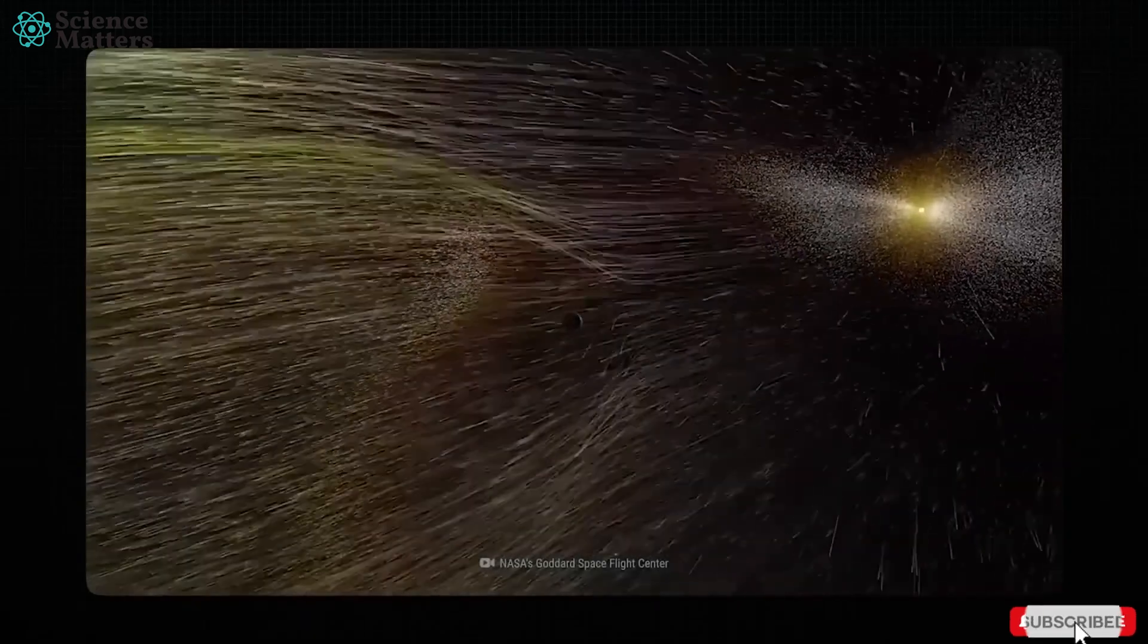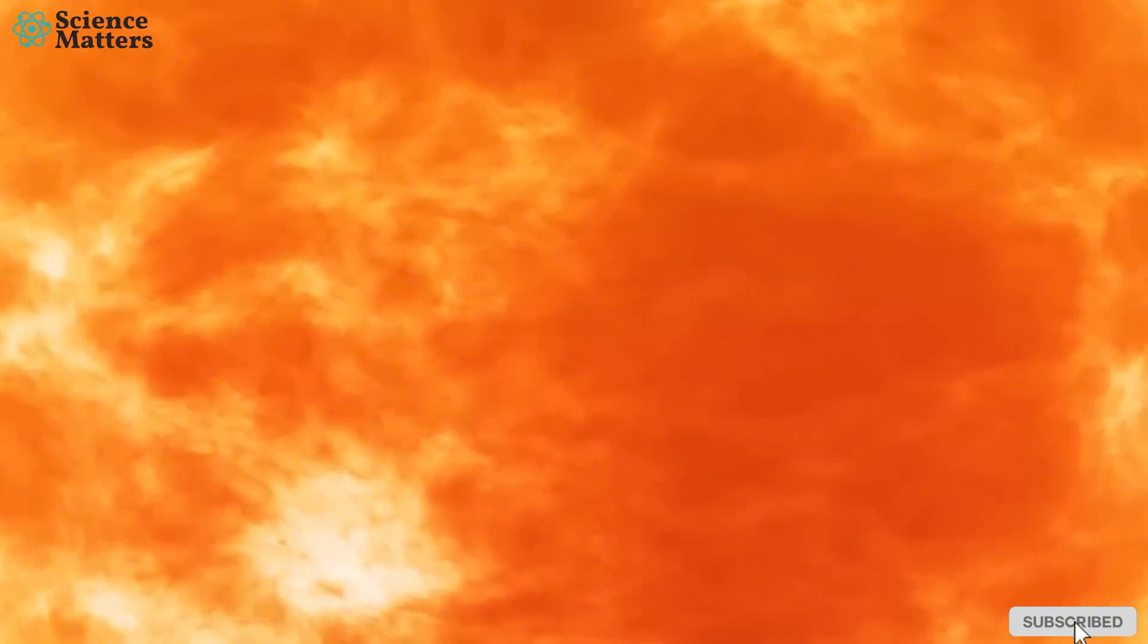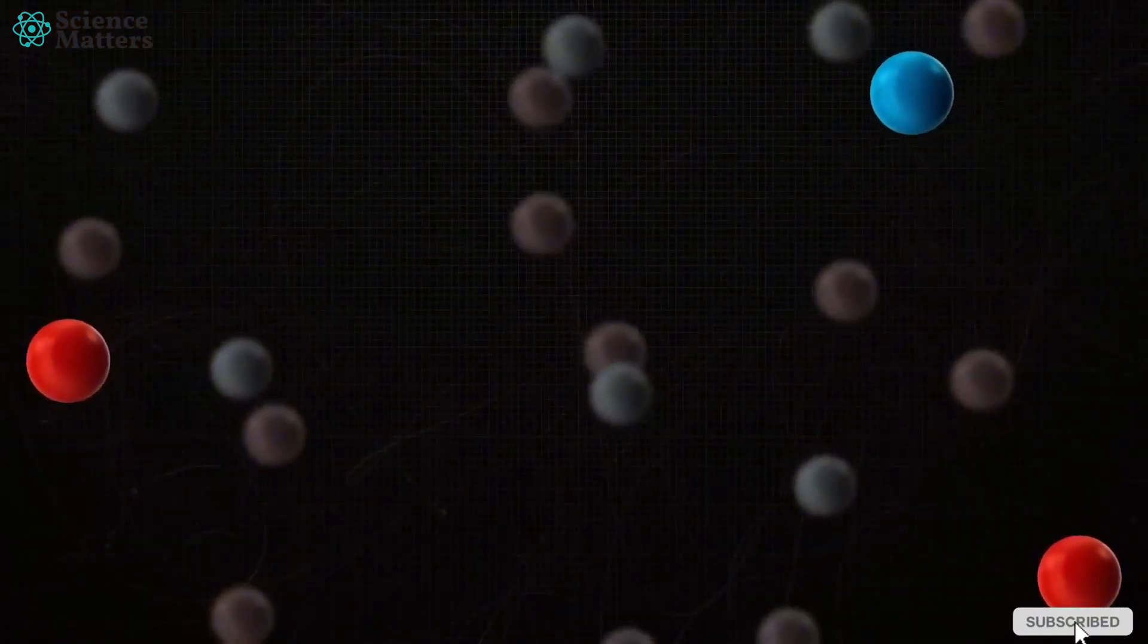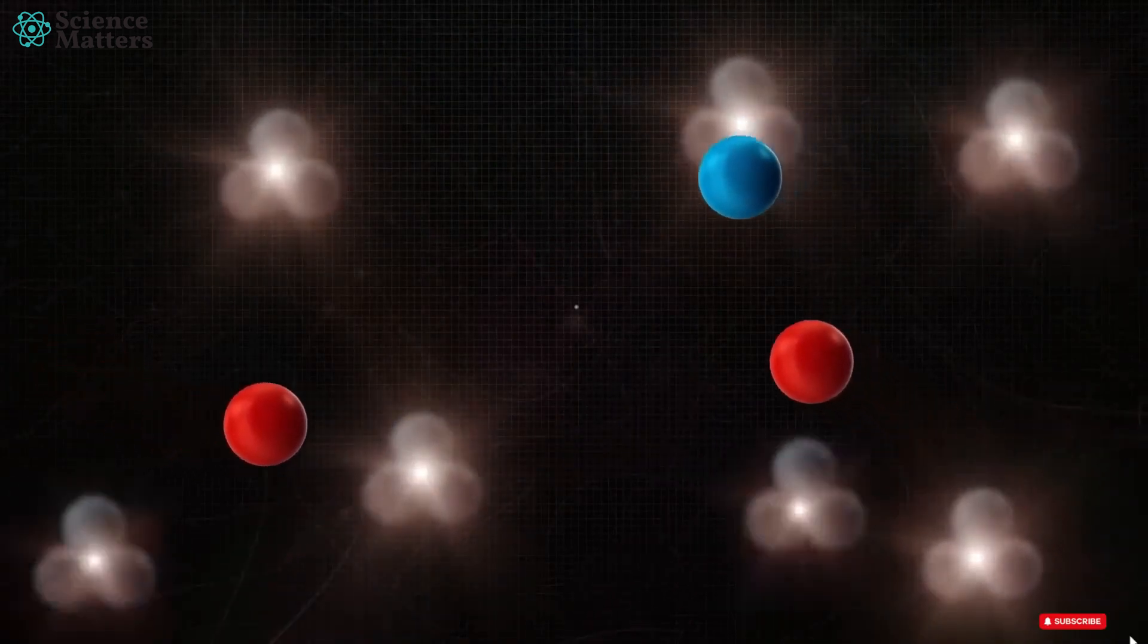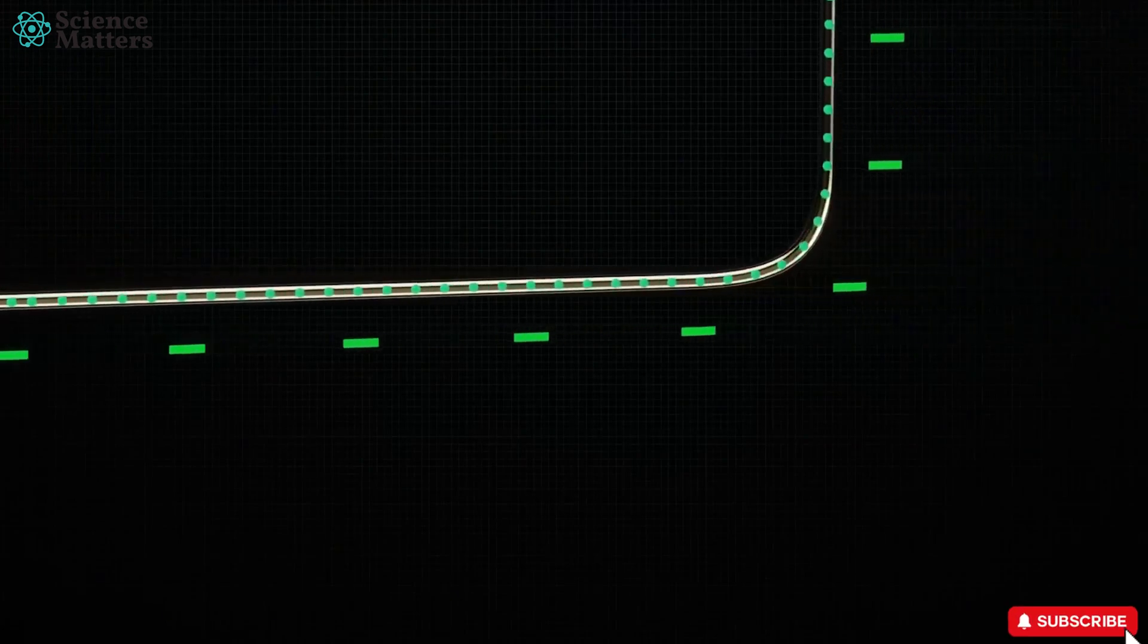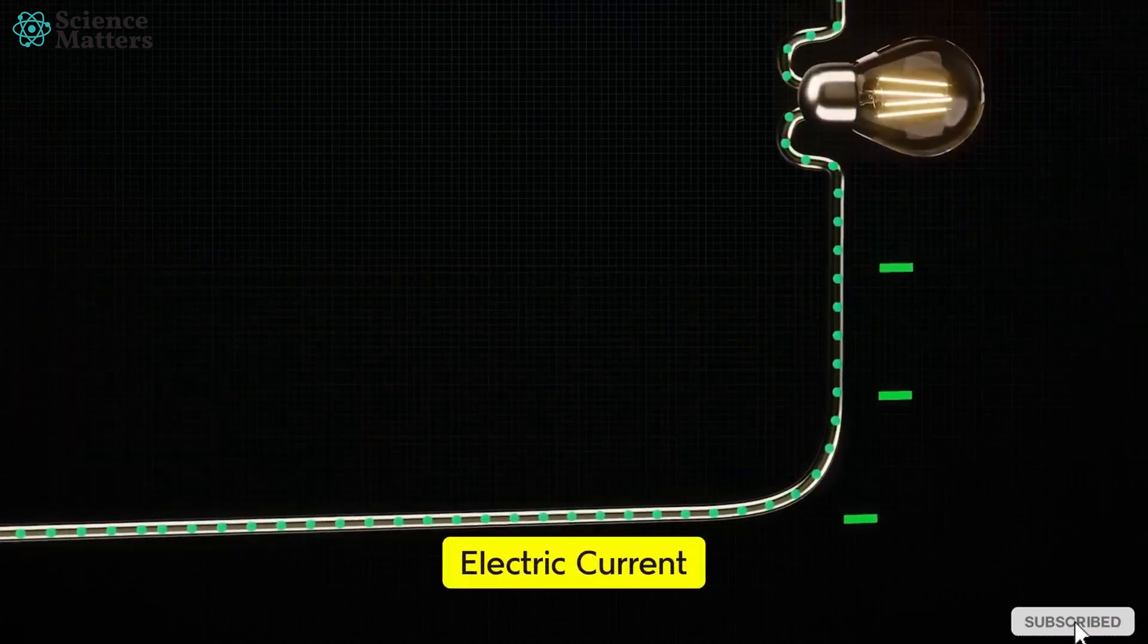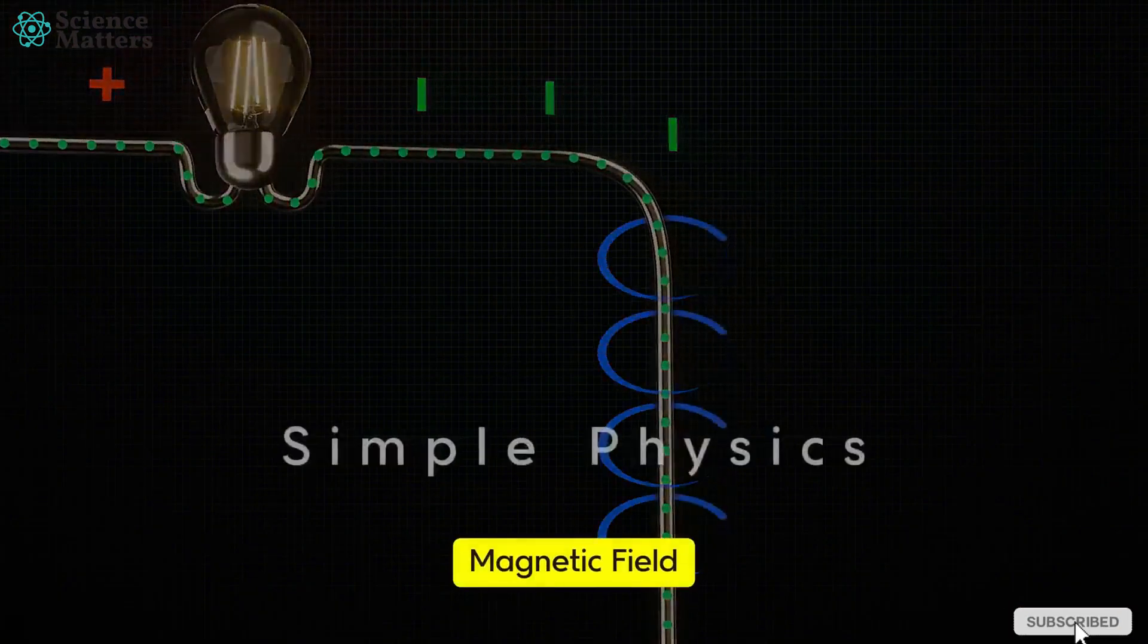To understand how this is happening, we need to understand the reactions and movements occurring in the sun's core. Look at this. This is the sun's core, where continuous nuclear fusion reactions occur, leading to the constant movement of charged particles. The flow of charged particles means electric current, and the presence of electric current equals a magnetic field. Simple physics.